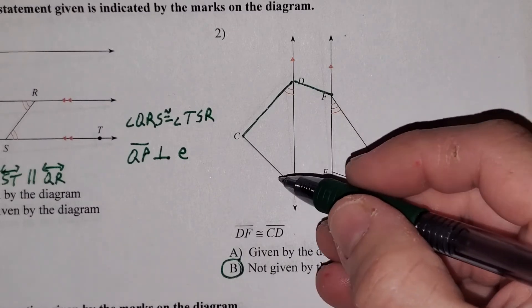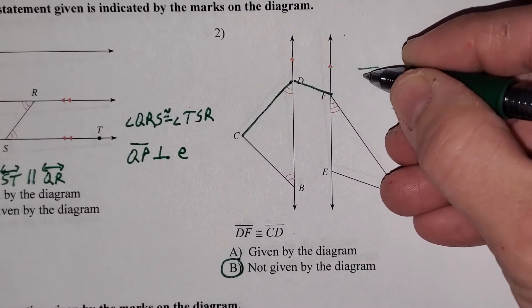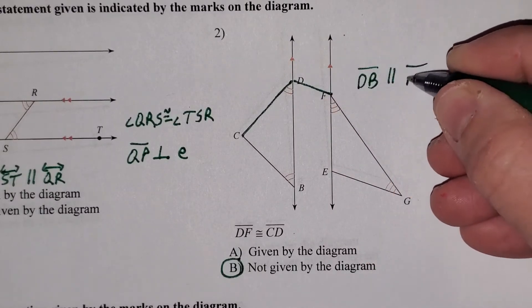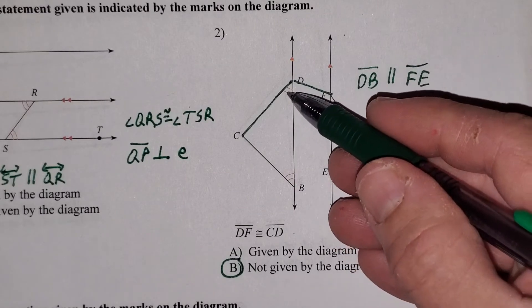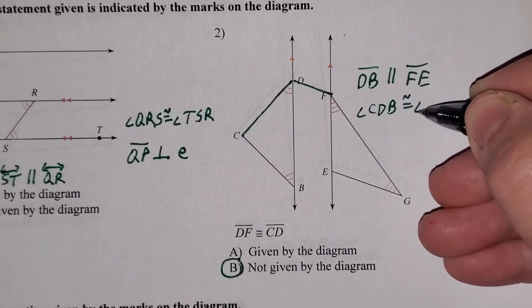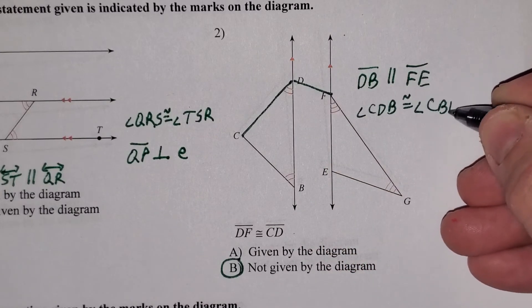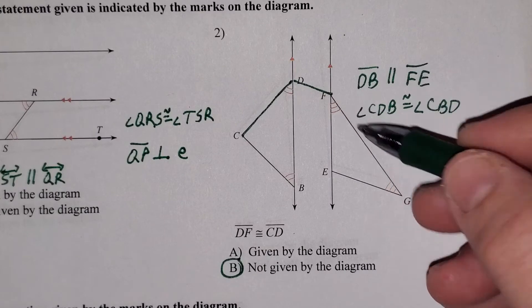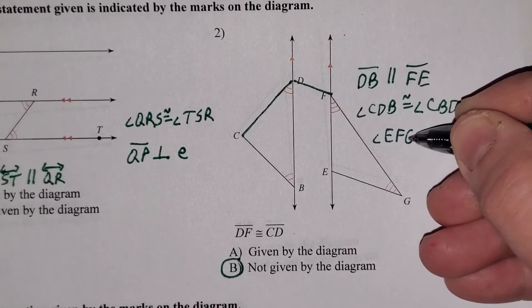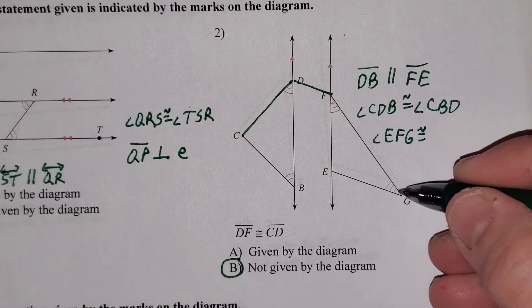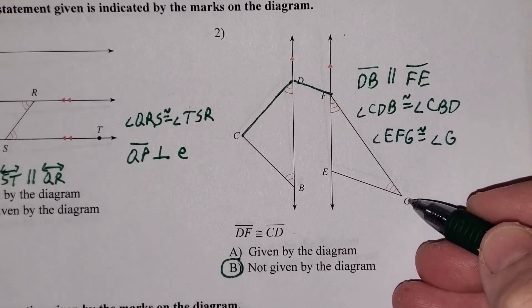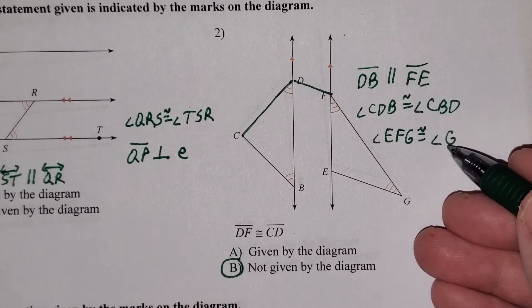Now, things we would know. We would know that line DB is parallel to line FE because of these arrow indicators. We would also know these two angles are congruent. So angle CDB is congruent to angle CBD. And we would have even another pair of angles be congruent right here. These base angles, which are angles EFG, would be congruent. And we could have called this just simply angle G. Now, why did I just use one letter for this one? Well, there's only one angle located at point G. So you can actually just shorten down how you're naming the angle, as such as I did.